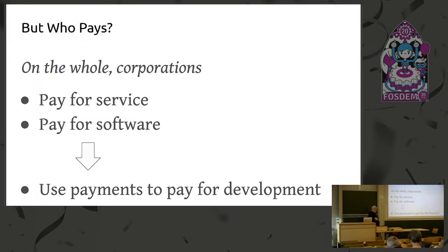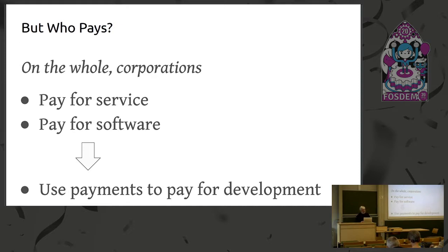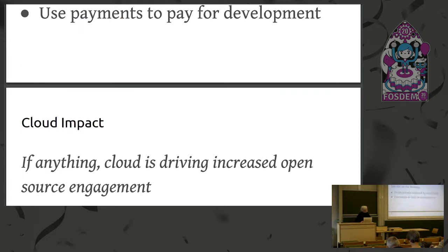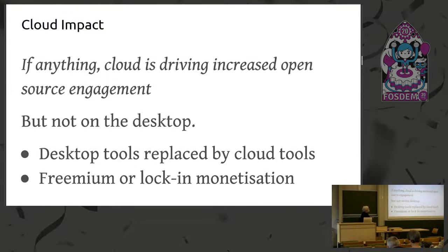Open source and free software has been paid for largely by corporations — because they have typically employed people who, either as their job or as a side effect of their job, caused the software to come into existence and be sustained. Corporations have funded this by charging for a service or for access to the software. The world has gradually been changing, and cloud adoption is, if anything, driving open source adoption — but not on the desktop.